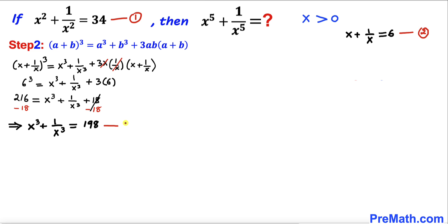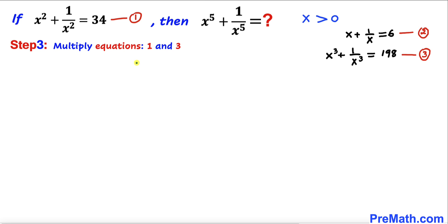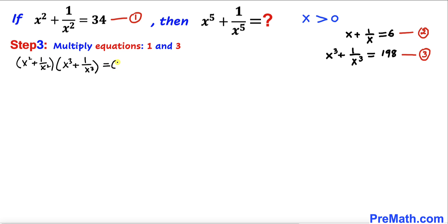Now we want to find x⁵ + 1/x⁵, so we are going to multiply equation one and equation three. We write (x² + 1/x²)·(x³ + 1/x³) = 34 × 198.